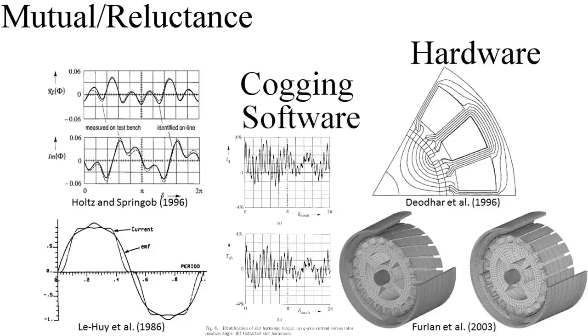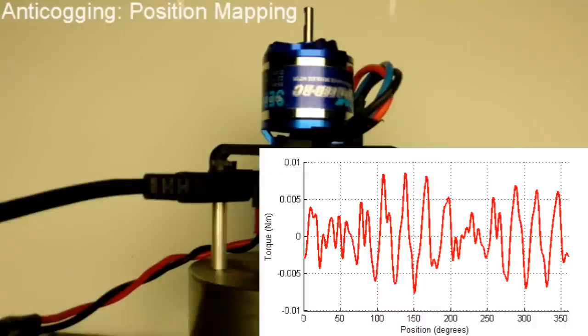Holtz and Springob laid down the foundation for cog mapping by iteratively monitoring current, while a speed loop tried to hold speed constant. We extend this to two methods without requiring a speed controller, current sensor, or iteration. The first method is to use position control at all positions, and map the applied voltage or current when the motor is stopped. We can also compensate for static friction or stiction, and transistor dead time with this method.